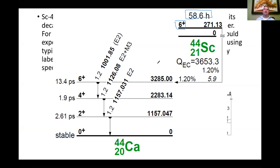We have the energy of the isomer. This is already an excited state of the scandium-44 nuclide. This 271.13, that's how much extra energy this isomeric state has compared to the ground state of scandium-44.